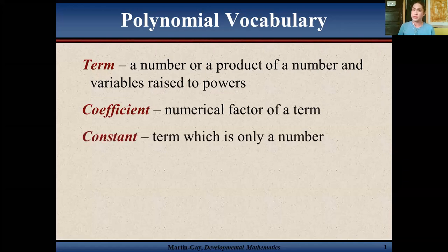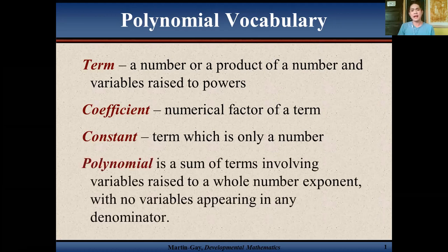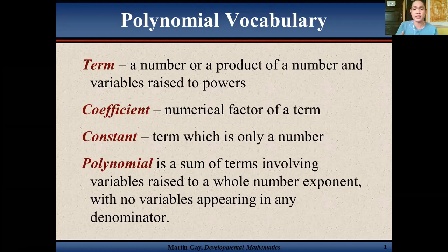Another vocabulary related to polynomials is the word 'constant.' A constant is the term which is only a number — no variable in it. That's what we call a constant term. Now, out of the words term, coefficient, and constant, we can define a polynomial. A polynomial is a sum of terms involving variables raised to a whole number exponent with no variables appearing in any denominator.